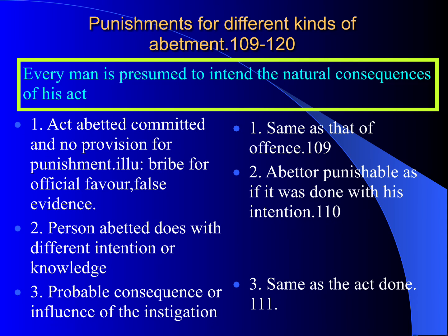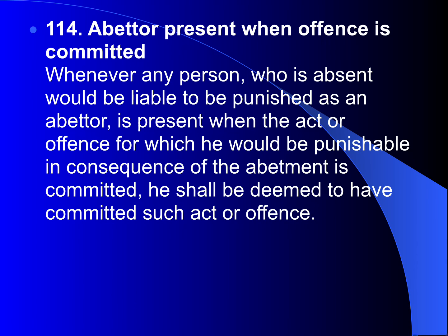Probable consequences or influence of the instigation are the same as the act done. Section 114 — abettor present when offence is committed: whenever any person who, if absent, would be liable to be punished as an abettor, is present when the act or offence for which he would be punishable in consequence of abetment is committed, he shall be deemed to have committed such act or offence.